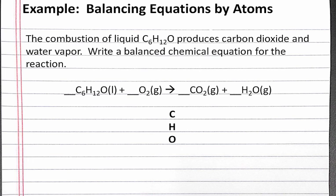The elements we need to balance are carbon, hydrogen, and oxygen. We'll start by balancing the elements that only show up in one compound on both sides, which are carbon and hydrogen. We'll balance the oxygen last because it shows up in more than one compound on both sides.